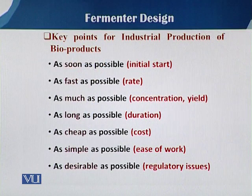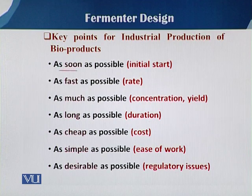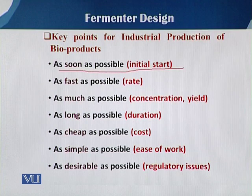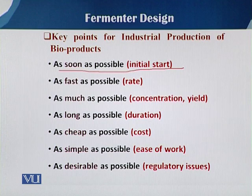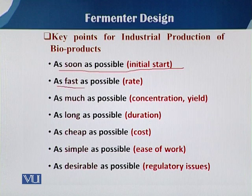When we want to produce any product on an industrial level using the fermentation process, the initial start in the fermentation process for the production of a bioproduct is very short compared to other methods. With fermentation, we can produce the product as fast as possible because we can control the rate of production.